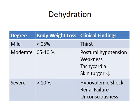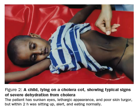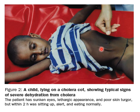If not treated, the patient would die. A child on a cholera bed shows typical signs of severe dehydration: sunken eyes, lethargic appearance, and poor skin turgor. However, once fluids are replenished — either orally or intravenously — the patient recovers. The same patient, within two hours after fluid therapy, was sitting up, alert, and eating normally.